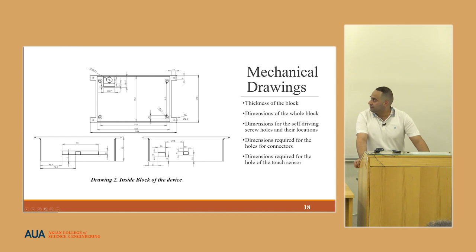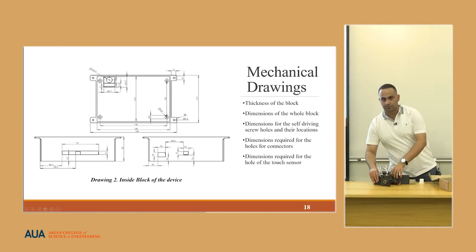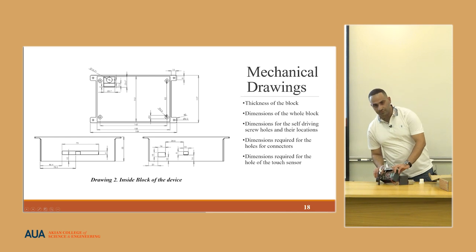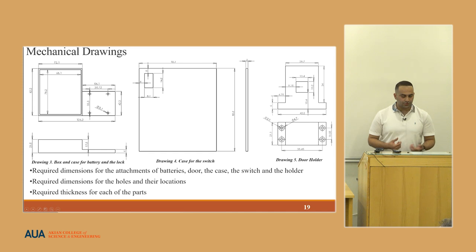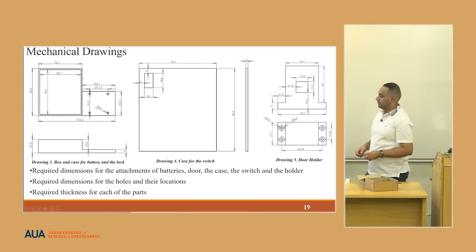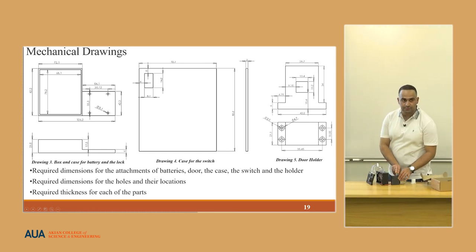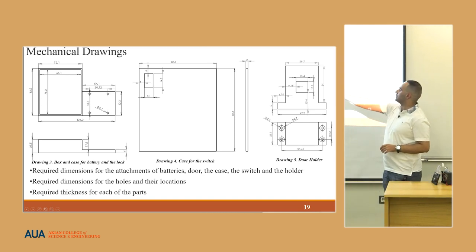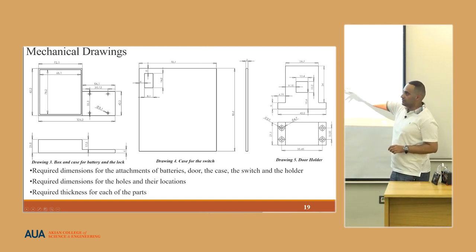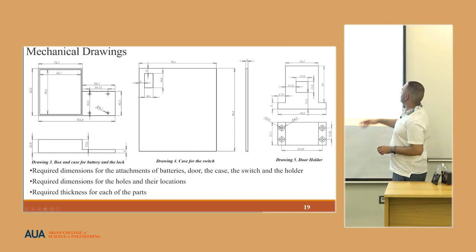The inner block drawing has similar structure but different dimensions — as visible in real life, the inner block is much larger than the outer block, as it is responsible for keeping all the circuits inside. The drawings for the battery box and case show the box with dimensions, the case, the hole for the switch, and the door holder.